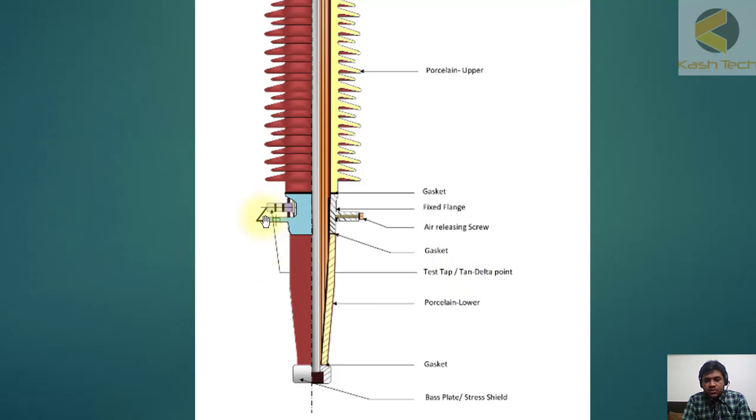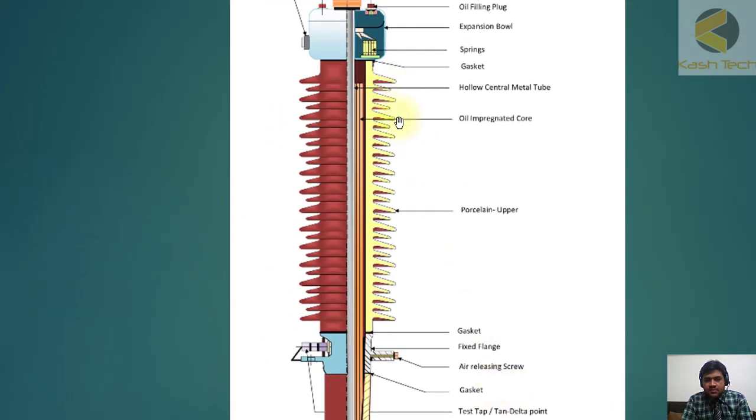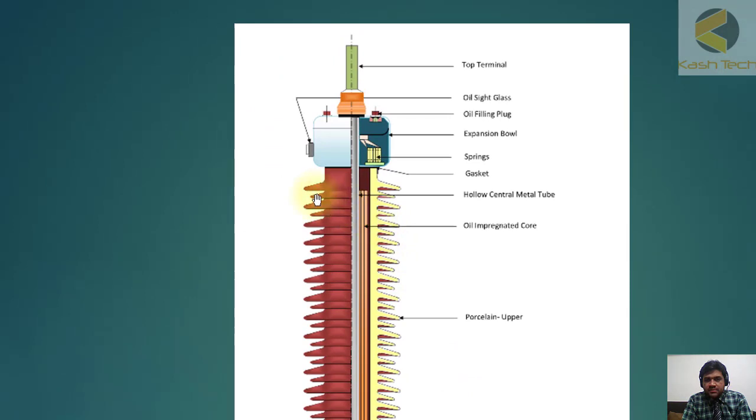This cap will be in screw shape, it will be opened and you can do the testing here. Again the lower porcelain, gasket, and then the base plate and stress. This is a very nice example of the bushing.